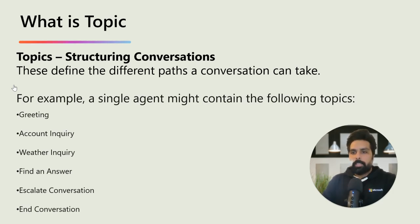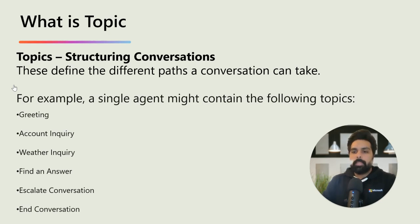So in Microsoft Copilot Studio, the topic represents a path a customer can be taken while interacting with your agent. For example, if a user asks about opening hours of a store, or as we did in the previous video, asking about an appointment — this is what your topic defines: the conversation path. A topic can have two key major elements.